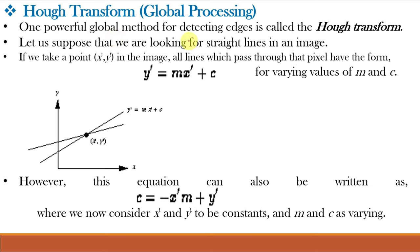Suppose we are looking for straight lines in an image. Starting with one point, say X-dash, Y-dash, all lines passing through it are of the form Y = MX + C, that is Y-dash = M·X-dash + C, for different values of M and C. There may be an infinite number of lines passing through X-dash, Y-dash. Therefore, we transform this point from the XY plane into a line in the MC plane, taking it into the parameter space, also known as the Hough space or MC space.